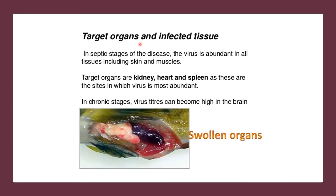For target organs and infected tissues, in septic stages the virus is abundant in all tissues including skin and muscles. The target organs are the kidney, heart, and spleen, as these are the sites where the virus is most abundant. In chronic stages, virus titers can become high in the brain.